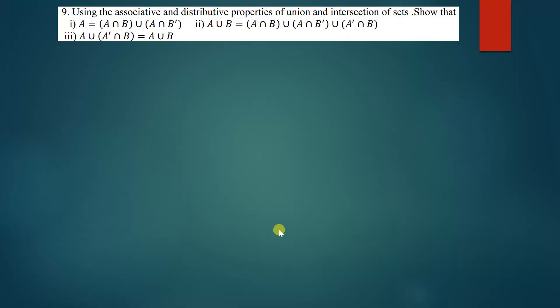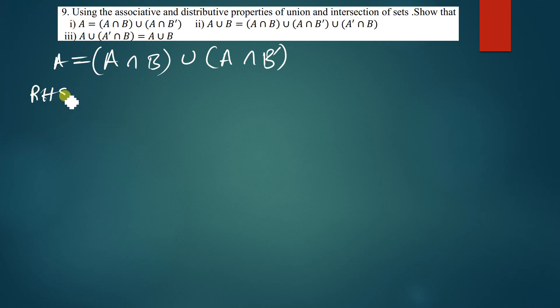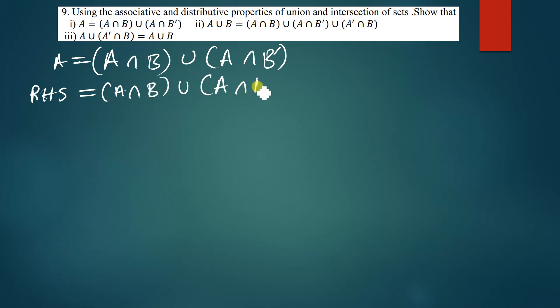Let's look at the first question. We have to prove that A is equal to (A∩B) ∪ (A∩B'). I'll take the right hand side, which is (A∩B) ∪ (A∩B').